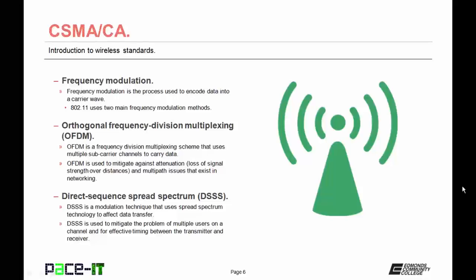The other frequency modulation method is Direct Sequence Spread Spectrum, or DSSS. DSSS is a modulation technique that uses spread spectrum technology to affect data transfer. It is used to mitigate the problem of multiple users on a channel and for effective timing between the transmitter and the receiver.